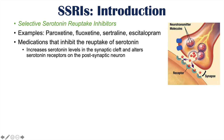This neuron releases serotonin, and oftentimes there's some leftover within the synaptic cleft that is re-taken up by reuptake transporters. But with the SSRIs, they actually block these transporters, so the reuptake of neurotransmitters is prevented, which leaves more serotonin within the synaptic cleft. That increased serotonin actually alters and down-regulates certain serotonin receptors on the postsynaptic neuron. That was a brief overview of the mechanism of SSRIs and how they work.